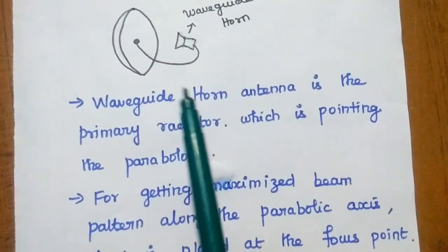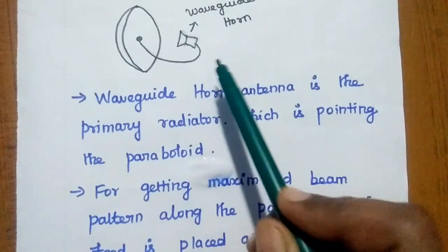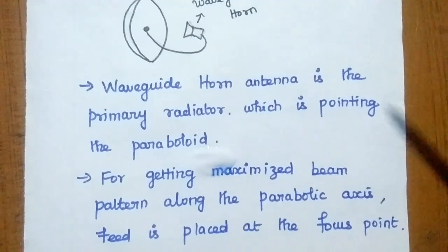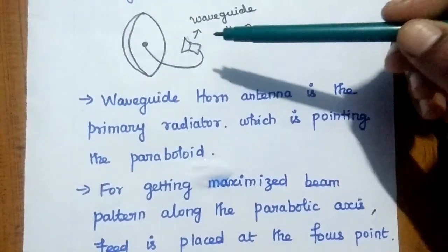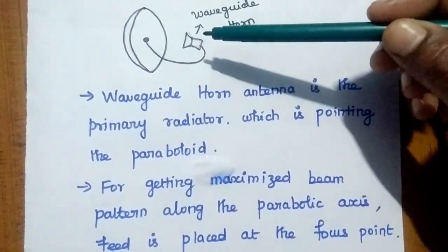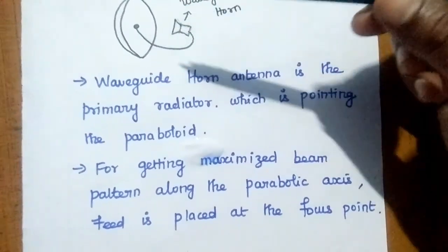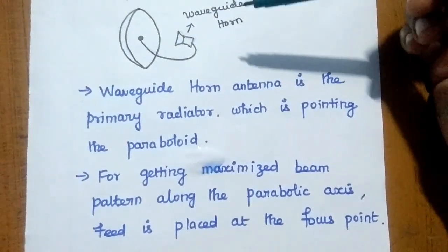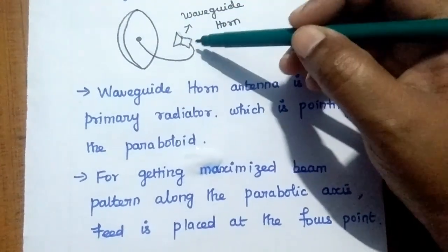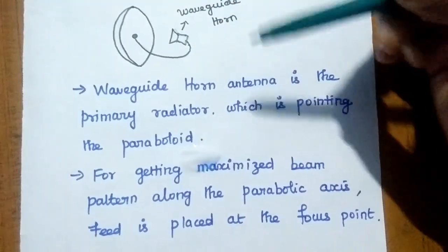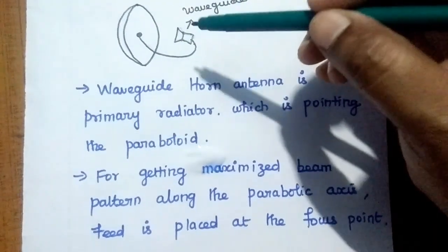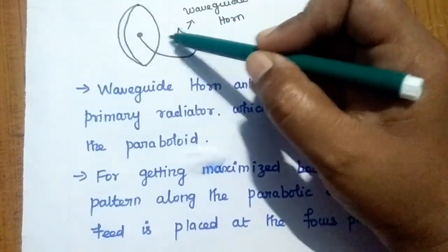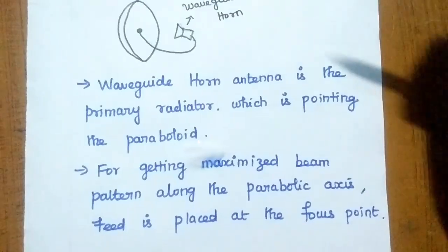The waveguide horn antenna is the primary radiator because it radiates the signal, or receives the signal in case of reception. The primary radiator points toward the paraboloid. For getting a maximized beam pattern along the parabolic axis, this horn is placed at the focus point. As we discussed in parabolic reflector, the feed is always placed at the focus point to radiate maximum signal towards the reflector.